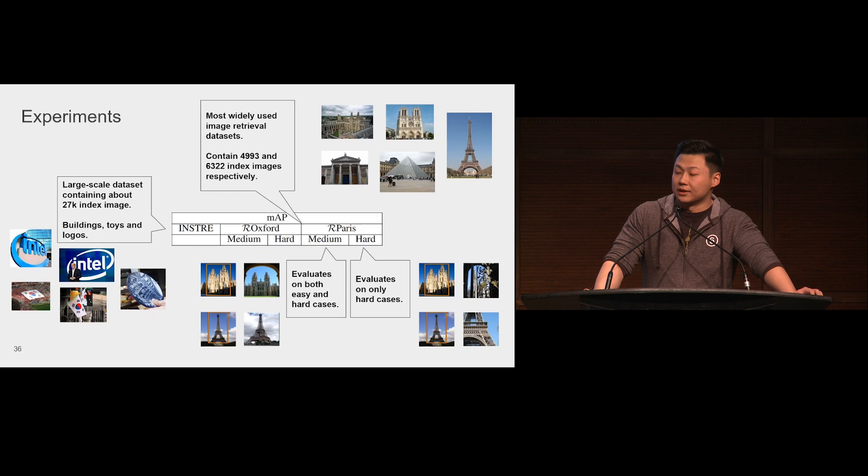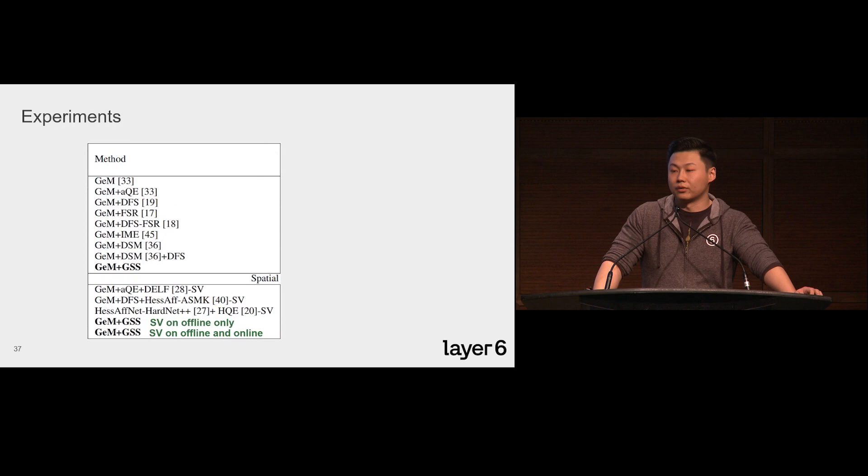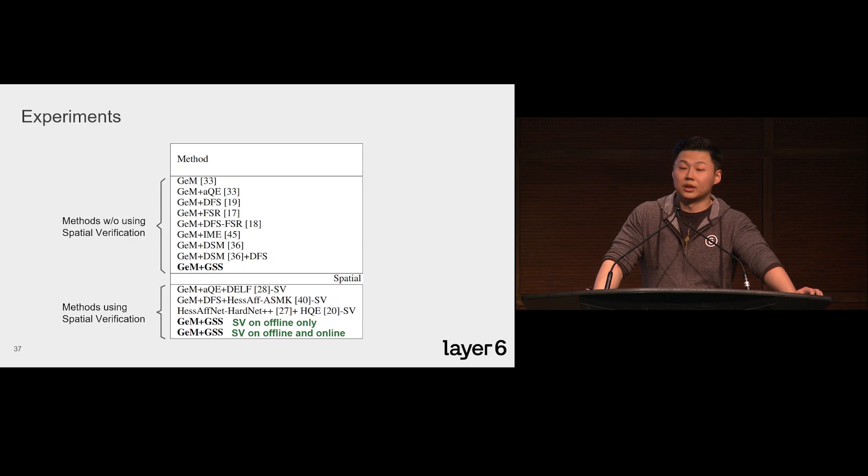The GEM is one of the leading CNN models. We use the descriptor from the GEM as the input descriptor for our model and all other baselines to make the comparison fair. These seven rows are currently leading manifold learning methods, and these are the state-of-the-art methods using spatial verification. Our model achieves a new state-of-the-art on all ten datasets and settings, with or without using spatial verification.